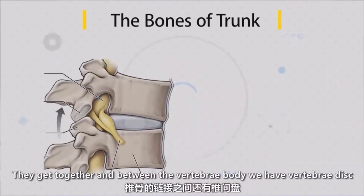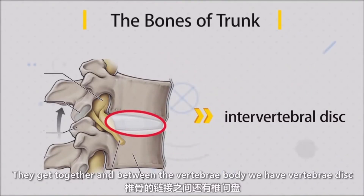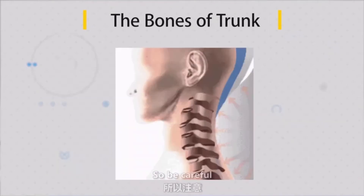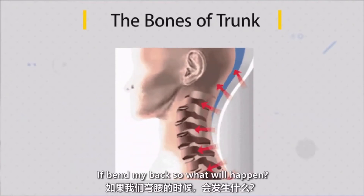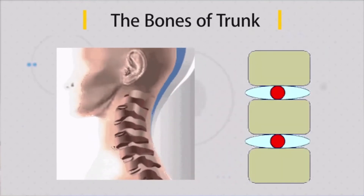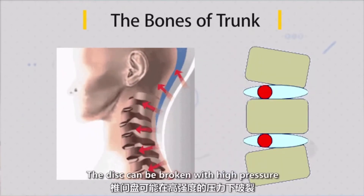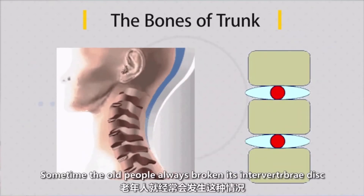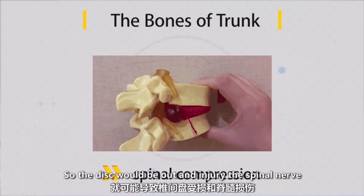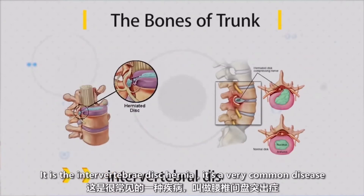The vertebrae get together, and between them we have the vertebral disc. If I bend my back, what would happen? The disc would be pressed — high pressure. Sometimes in older people, the disc would come out and injure the spinal nerve. That's what we call the intervertebral disc hernia. It's a very common disease.